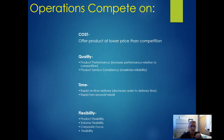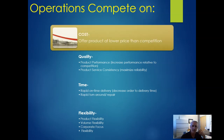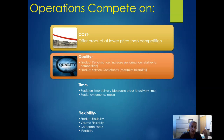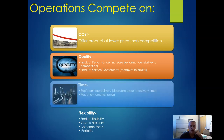Operations can compete on four things: cost, quality, time, and flexibility. Cost means offering a product or service at a lower price than the competition. Quality means better performance or more consistent, reliable service. Time means rapid on-time delivery — something Amazon really focuses on — or rapid turnaround on repair. Those things matter a lot to consumers in certain technology spaces.